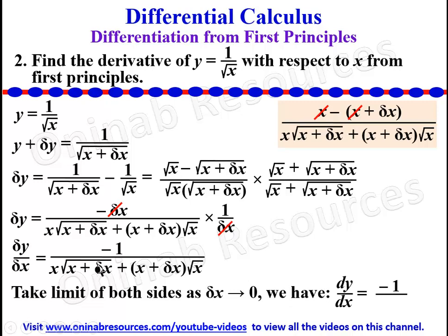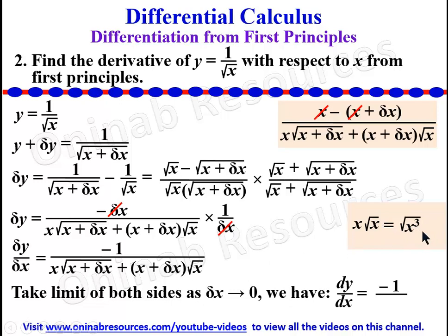Then we come down to the denominator. When delta x is equal to 0, we'll be left with x root x. This x is the same thing as square root of x squared, multiplied by root x will give us root x cubed. Similarly on the other side, we'll still be left with x root x, which is root x cubed. Adding these gives root x cubed plus root x cubed, which gives us 2 root x cubed. That is the derivative of y equal to 1 over root x from first principles, which equals negative 1 over 2 root x cubed.